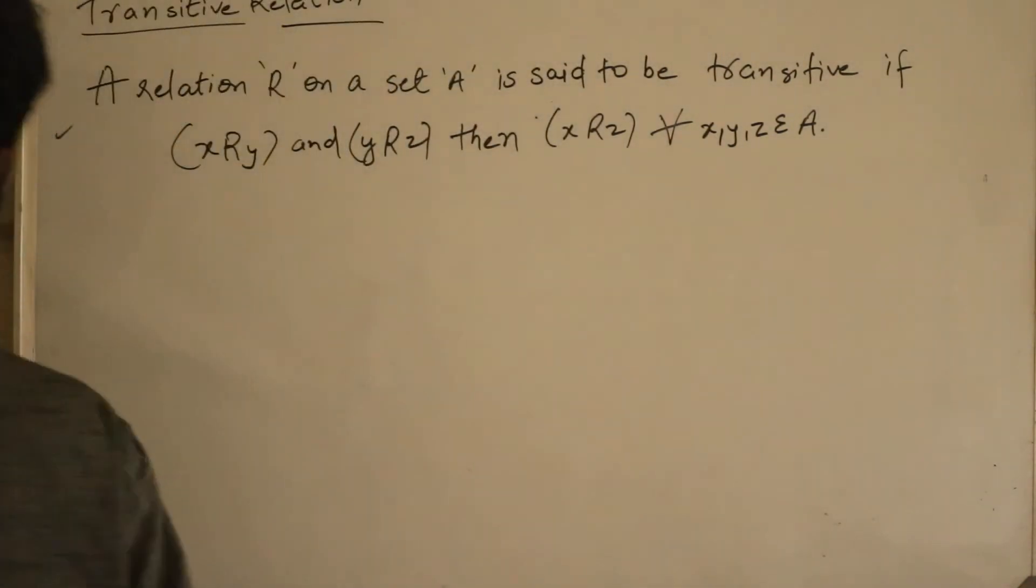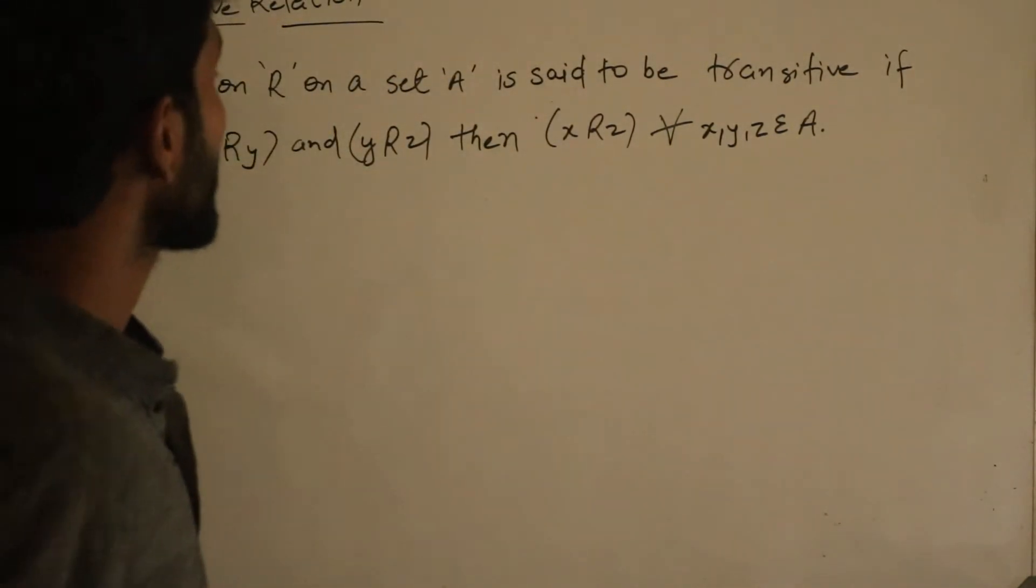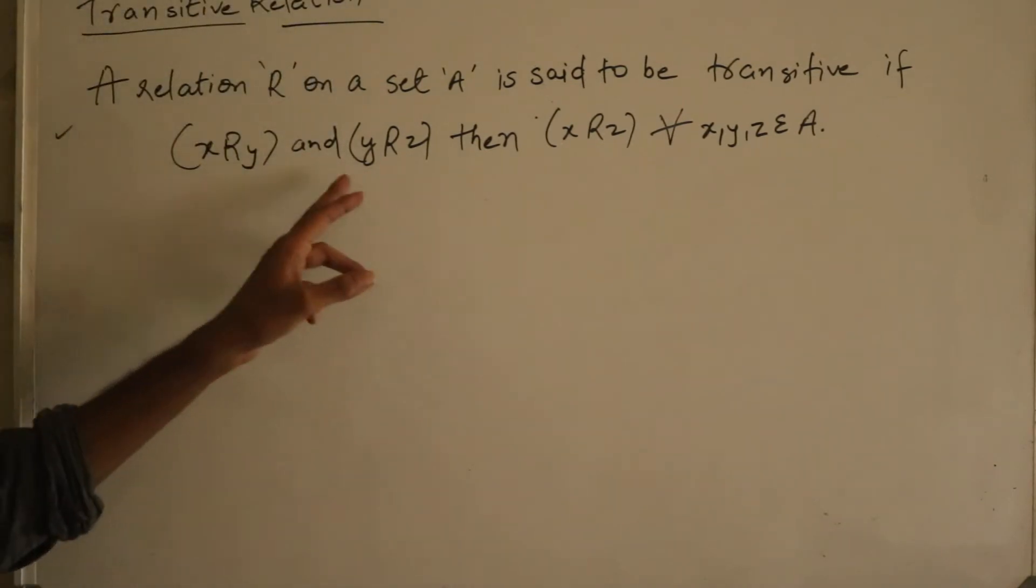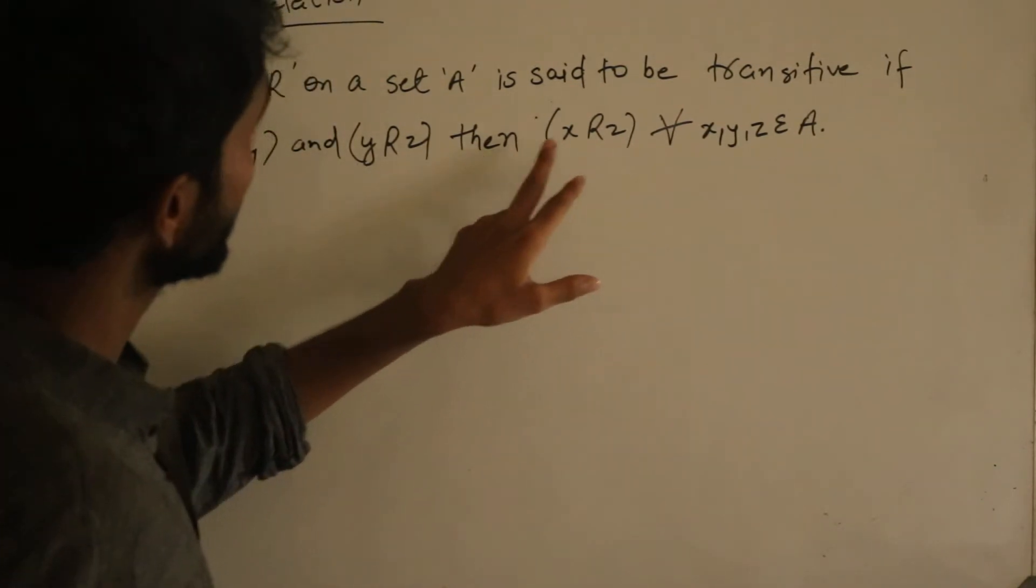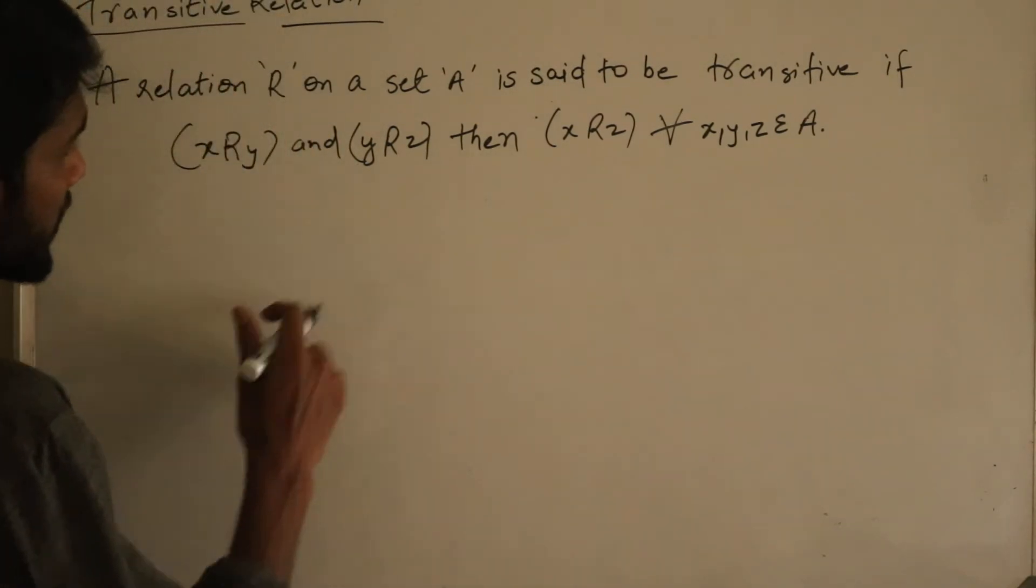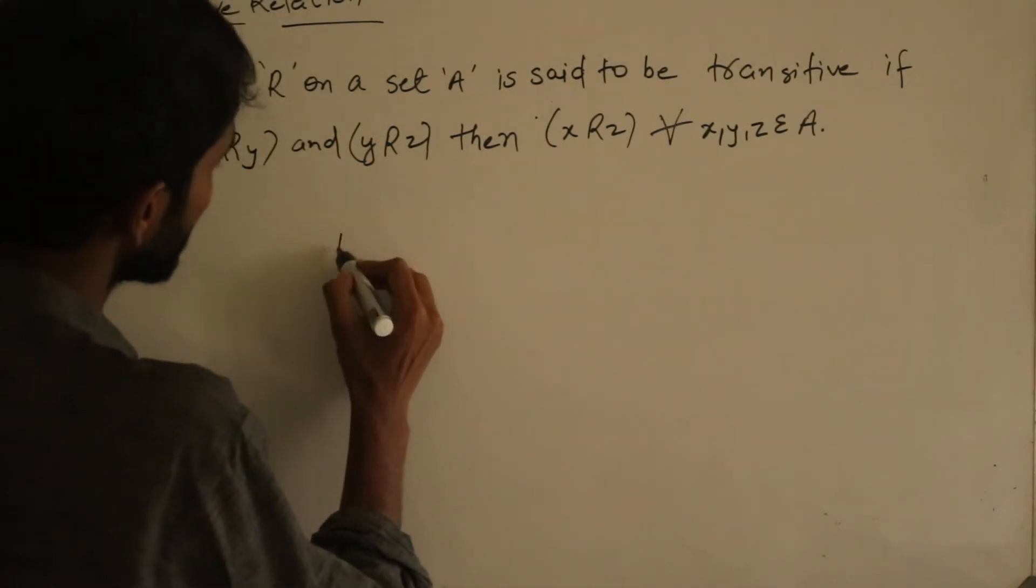See transitive relation. A relation R on a set A is said to be transitive if X related to Y and Y related to Z, then X related to Z will be there in a set. So what is saying that if suppose